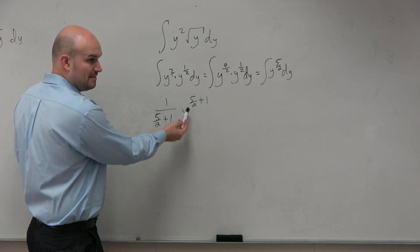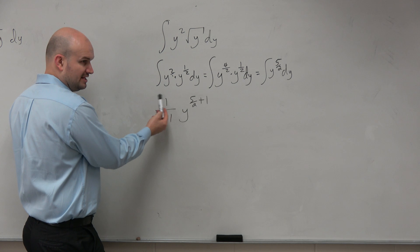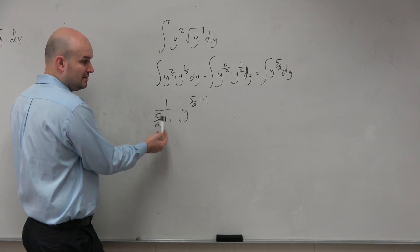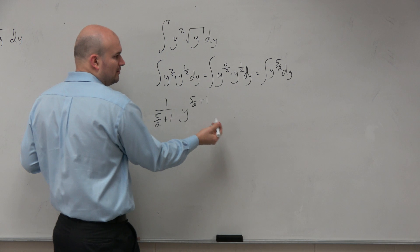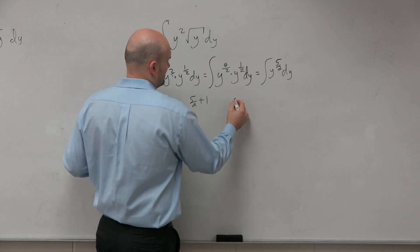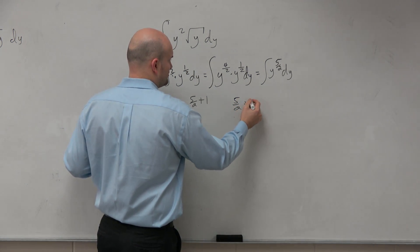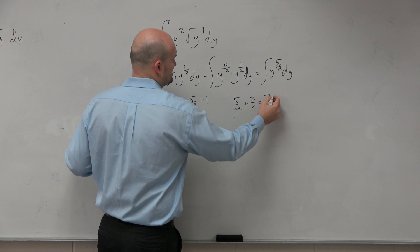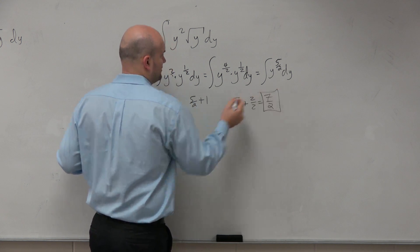So we've got to add, remember the rule of integration, we've got to add 1 and then divide by that number as well. So if we look at this, what's 5 halves plus 1? Well, again, doing the same thing, 5 halves plus 2 over 2 equals 7 halves. Thank you, Gabby. I made my mistake.